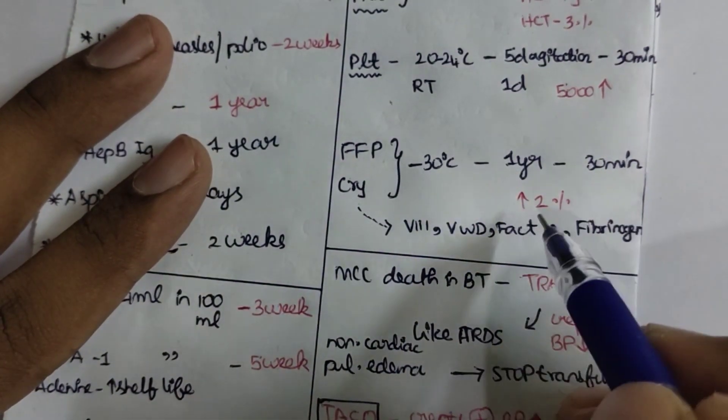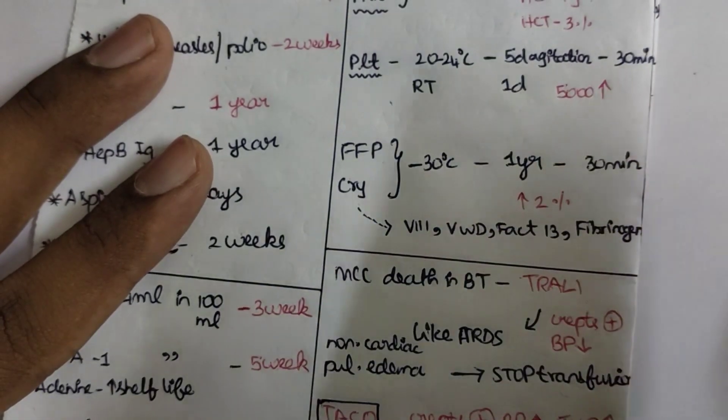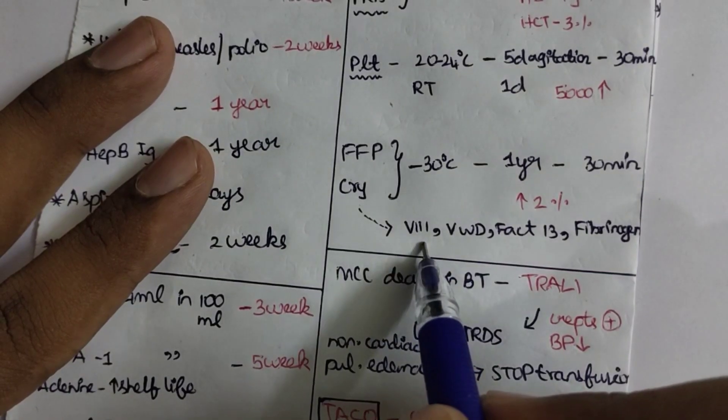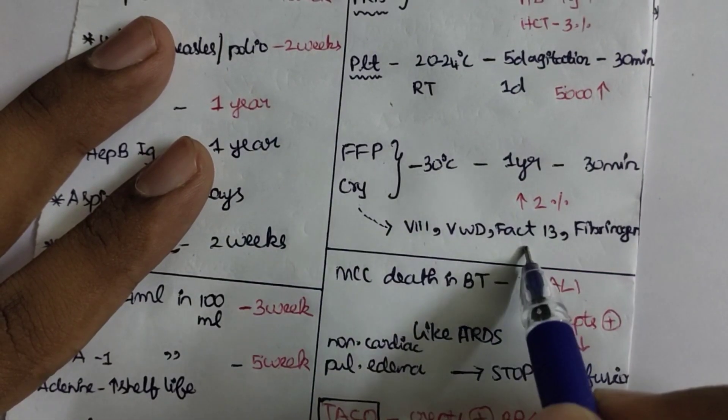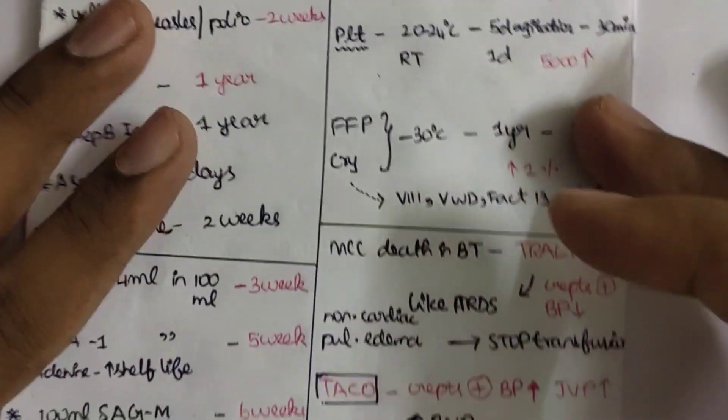This increases the clotting factors by about 2% in the patient's body. The cryoprecipitates are rich in Factor 8, von Willebrand factor, Factor 13, and fibrinogen.